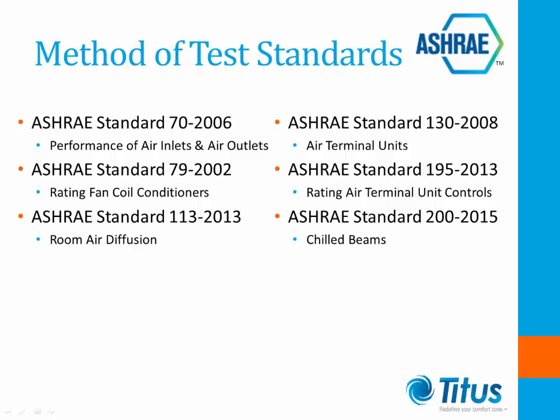Some of these standards include Standard 70 for testing grills, registers, and diffusers — otherwise known as air outlets and air inlets. Standard 79 for testing fan coils, which is currently under revision. Standard 113 is a method of test standard for room air diffusion, steady state performance of occupied spaces — in other words, a field test. Standard 130 is for testing terminal units and is also used as a method of test for AHRI Standard 880 for terminal unit testing and certification. Standard 195 is a new standard providing a method of test for air terminal unit controls. Standard 200 is also a new standard for testing chilled beams.